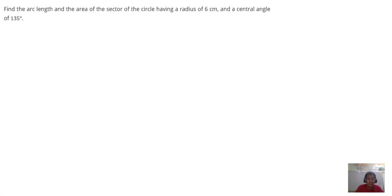Find the arc length and the area of the sector of a circle having a radius of 6 cm and a central angle of 135 degrees. This is the same as our previous example except that the given measure of angle is in degrees.